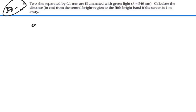So we have a slit separation distance of 0.1 millimeters which would be 10 to the minus 4 meters. We have wavelength of light is 540 nanometers and that would be 5.4 times 10 to the minus 7 meters.